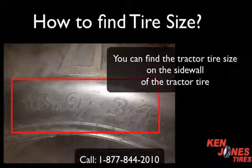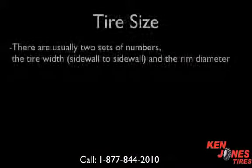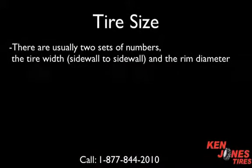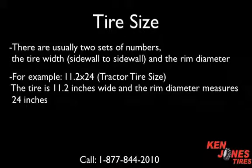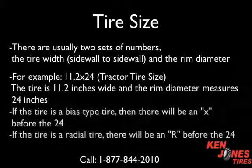You can find the tractor tire size on the sidewall of the tractor tire. There are usually two sets of numbers: the tire width from sidewall to sidewall, and the rim diameter. For example, if your tractor tire size is 11.2 by 24, the tire is 11.2 inches wide and the rim diameter measures 24 inches.